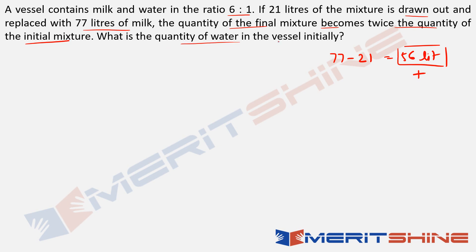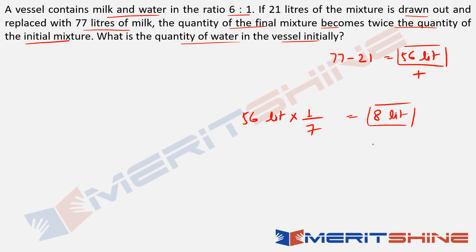The question asks: what is the quantity of water in the vessel initially? The initial total quantity is 56 liters, and milk to water is 6 to 1. So water is 1/(6+1) × 56 = 1/7 × 56 = 8 liters. Had they asked the initial quantity of milk, you'd say 6/7 × 56. It's an easy one. The key is not to get into formulas — just read the question carefully. At times they ask very simple things.